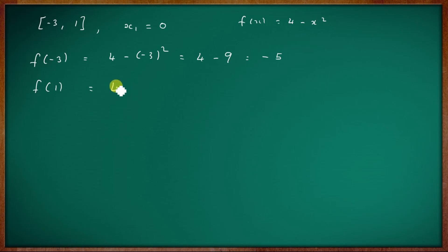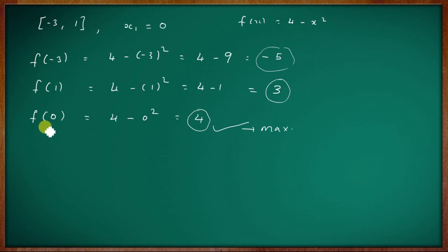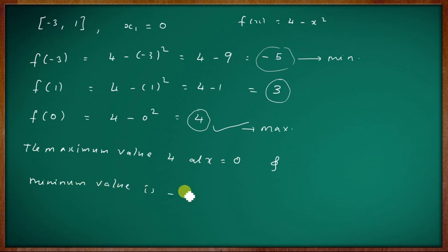Computing: f(-3) = 4 - (-3)² = 4 - 9 = -5. f(1) = 4 - 1 = 3. f(0) = 4 - 0 = 4. The minimum value is -5 at x = -3.